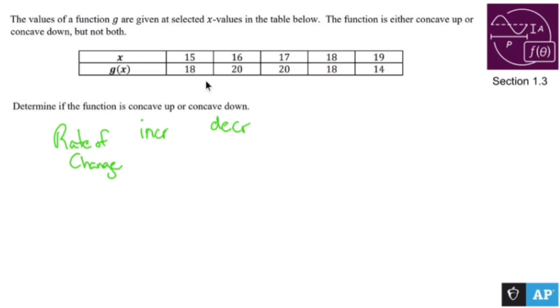Okay, so to get from 18 to 20, we add 2. To get from 20 to 20, you add 0. To get from 20 to 18, you subtract 2. And to get from 18 to 14, you subtract 4.